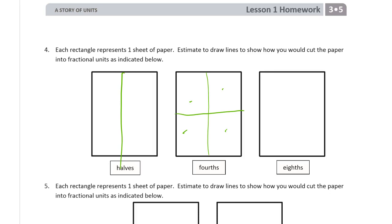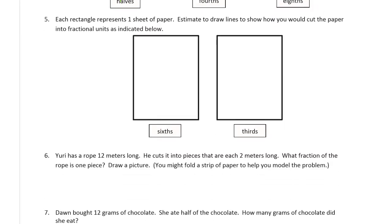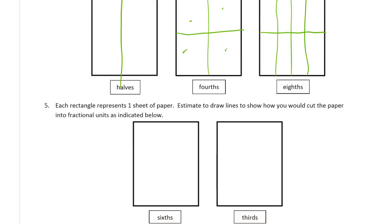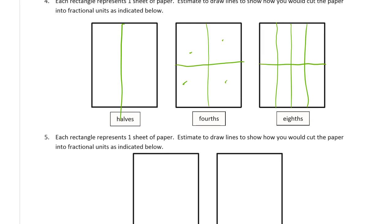Eighths. I can do... You can do eighths this way. Start with fourths, and cut all the fourths in half. Any way you do it, you just want eight equal parts. Lots of different ways that you can do it. There really are. As long as the parts are mostly equal, and you have eight of them, you have eighths.